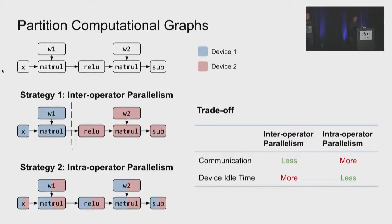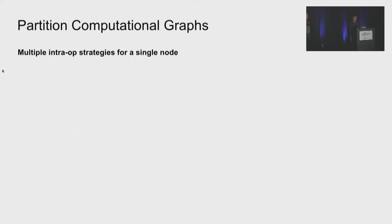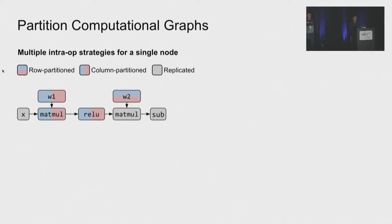So for the inter-operator parallelism, it requires less communication but has more device idle time. And for intra-operator parallelism, it requires more communication but has less device idle time. Under this classification, there are more variants. So first, for the intra-operator parallelism, there are multiple possible strategies to partition an operator. For example, for a matrix, we can partition it along rows or we can also partition it along columns or we can replicate it. When connecting these nodes in a graph, different partition strategies can lead to totally different computation and communication cost. So this is a very difficult combinatorial problem.